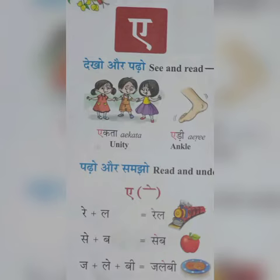Kata. Can you see? There are three children. Are there? Isn't it? So, A. Kata. Unity. A. Ankle. Pathho, aopatho.